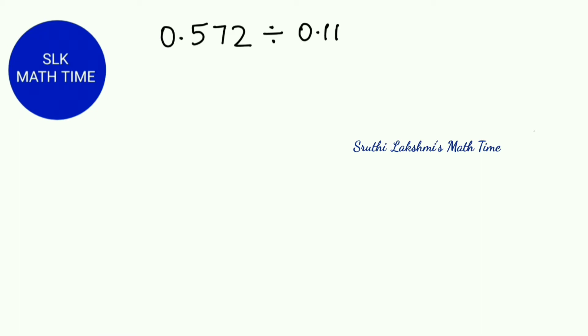So let's see an example. Let's try 0.572 divided by 0.11. So here 0.11 is our divisor and 0.572 is our dividend.